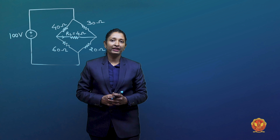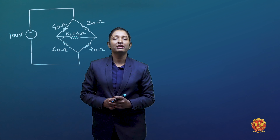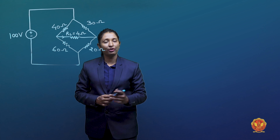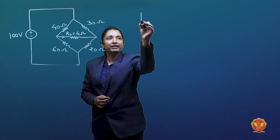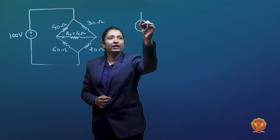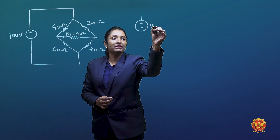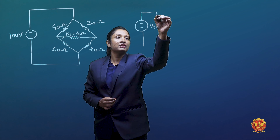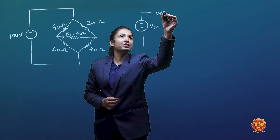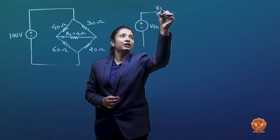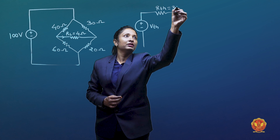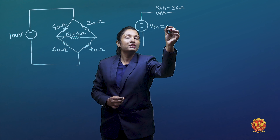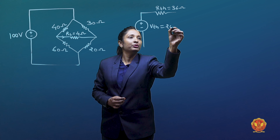After finding out VTH and RTH, we draw the last step — the equivalent circuit. Our equivalent circuit is a voltage source VTH in series with RTH. RTH value is 36 ohms and VTH is equal to 20 volts.